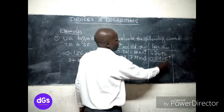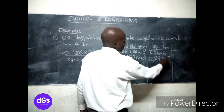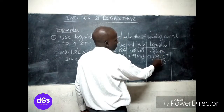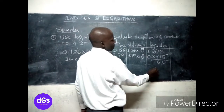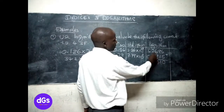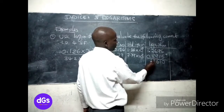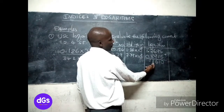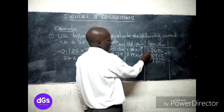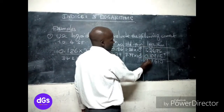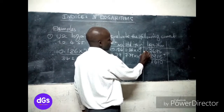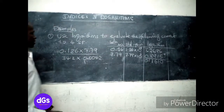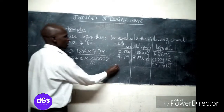Adding the two numerator logarithms: bar 1.2695 plus 0.8915. In the mantissa: 5 plus 5 is 10, carry 1; 9 plus 1 plus 1 carry is 11, carry 1; giving 16 — carry 1. The characteristics: bar one plus 0 plus the carry of 1 gives 0. So the sum for the numerator is 0.1610.